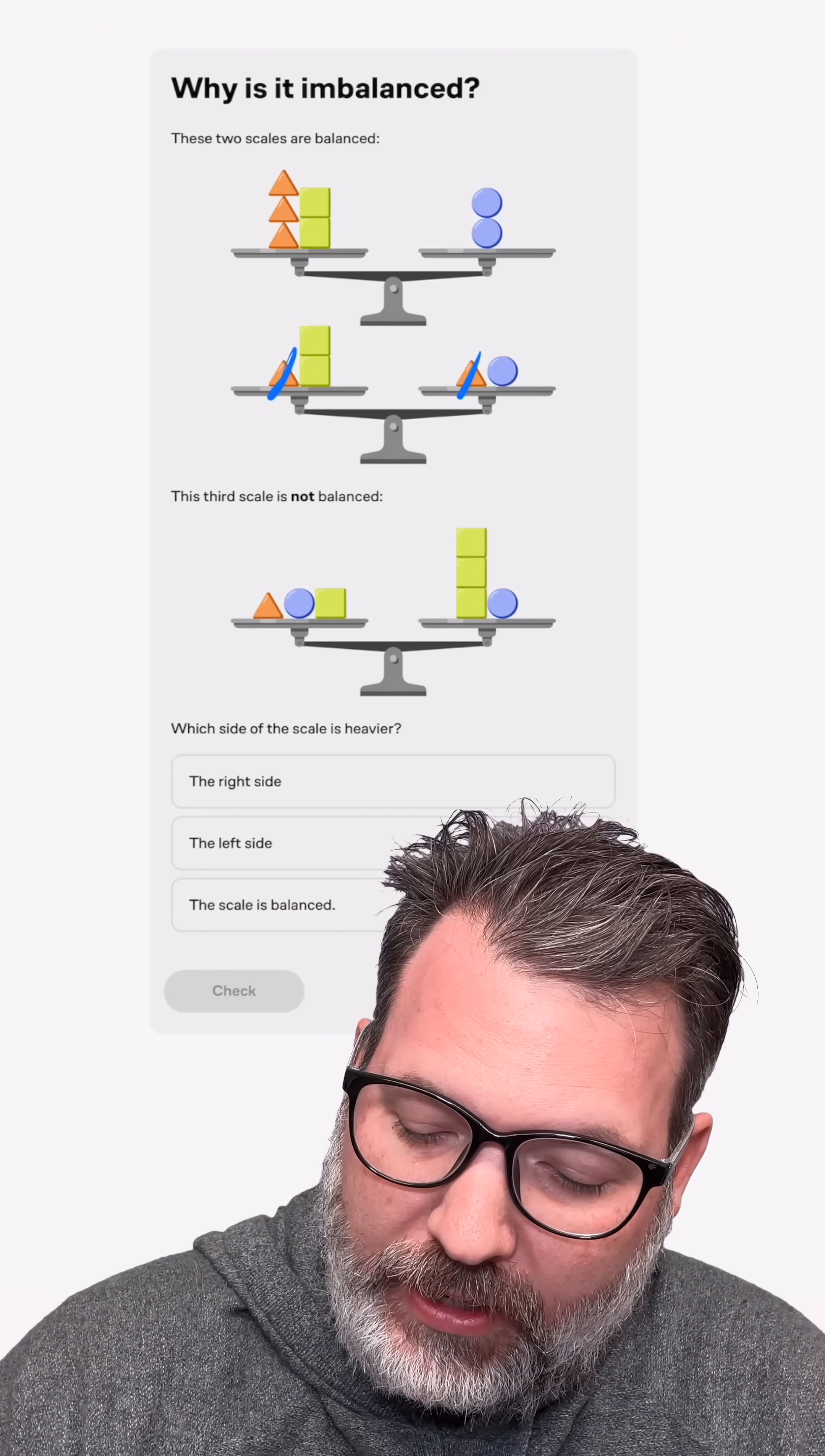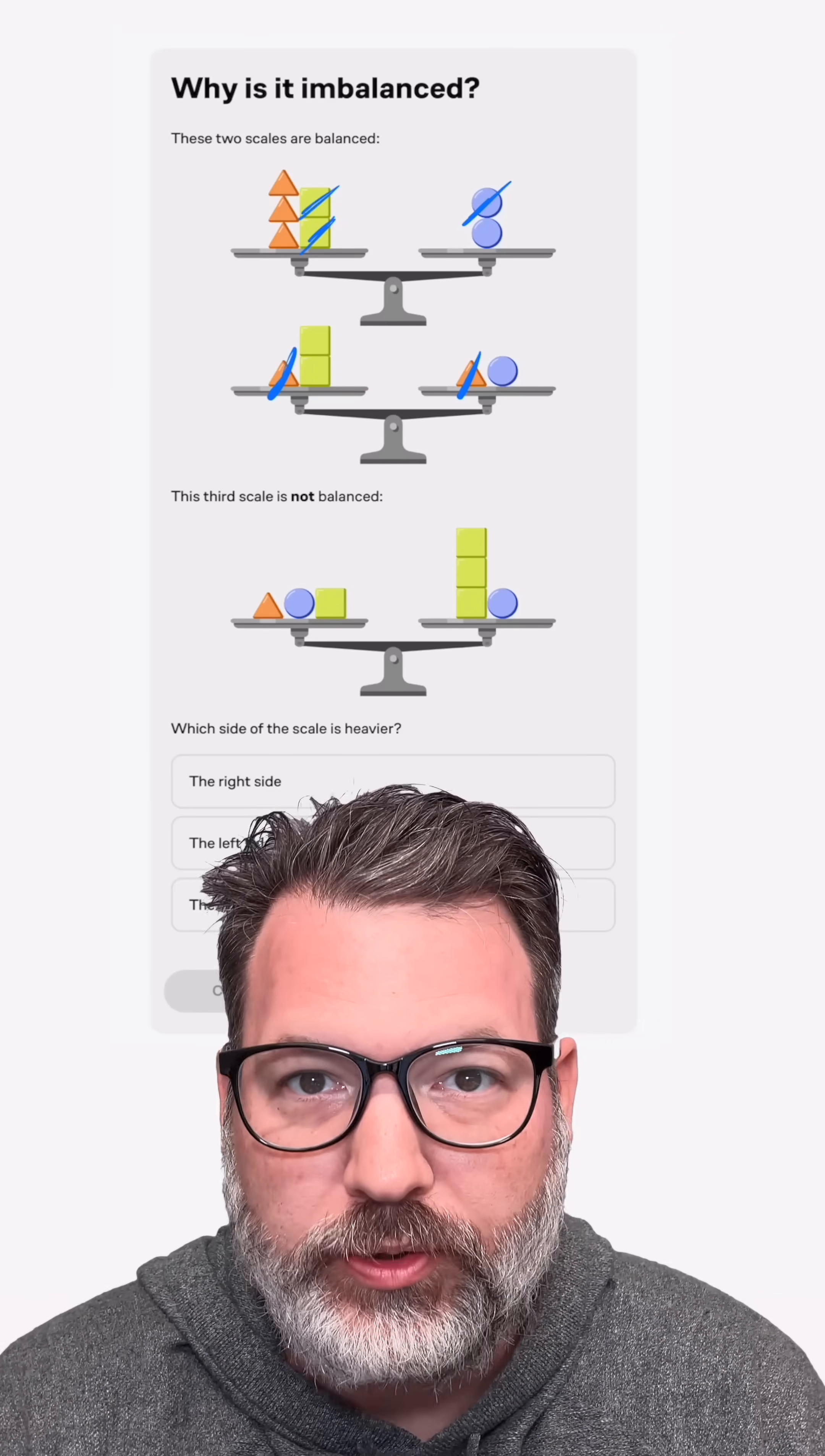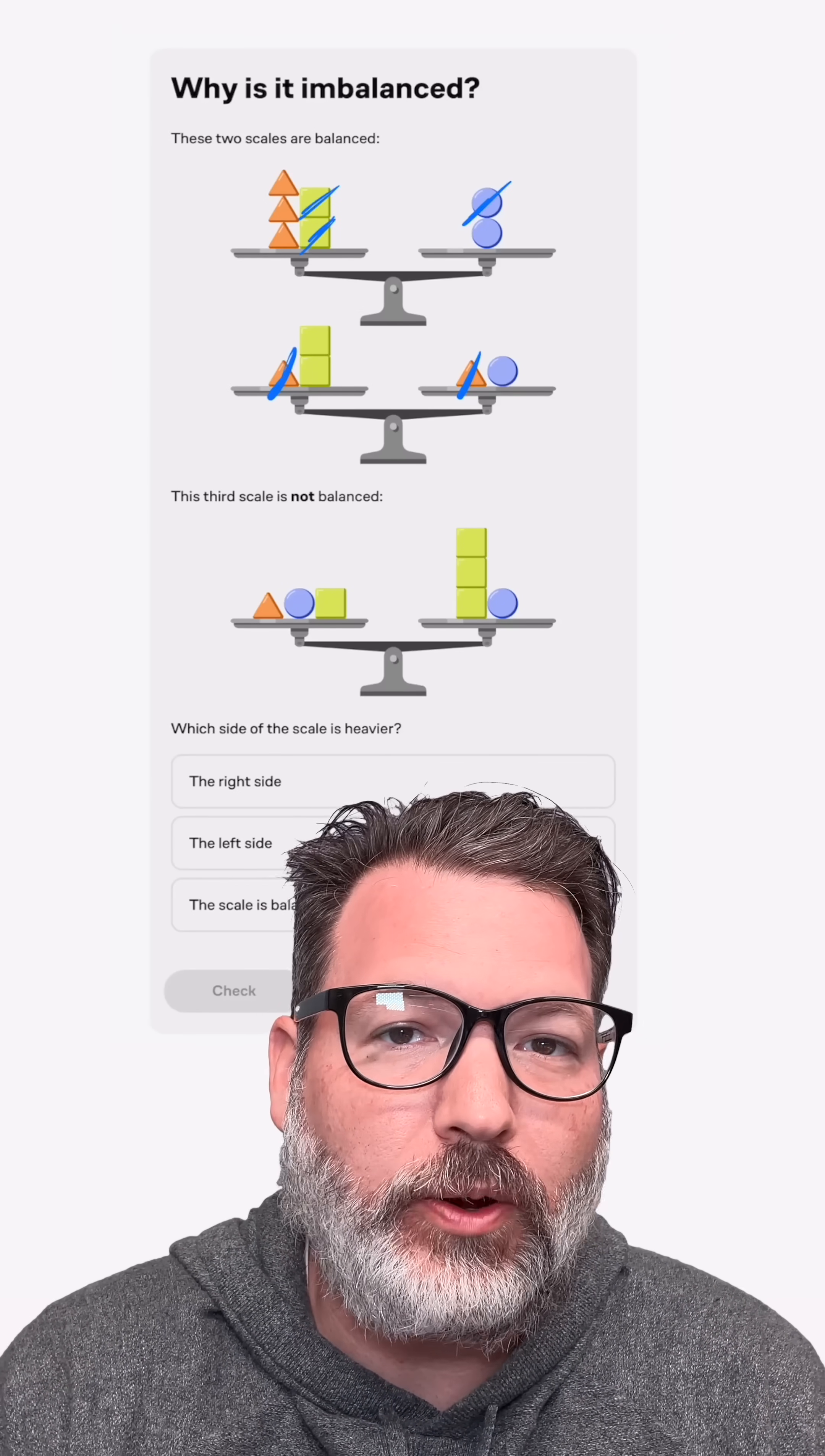So coming back up to this first scale, I can see circle on the right and two squares on the left, and now that I know those balance each other out, I'm actually going to ignore them.